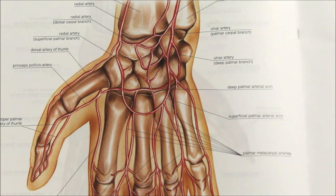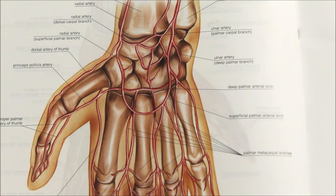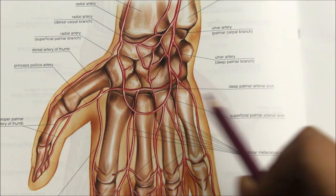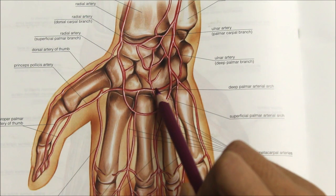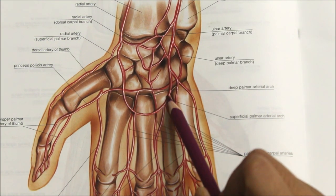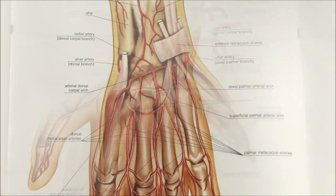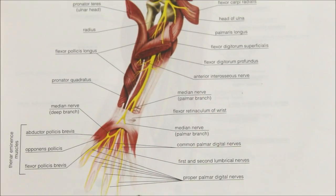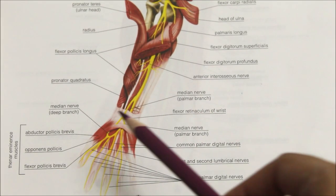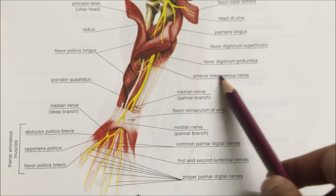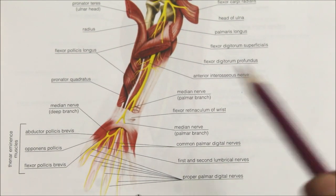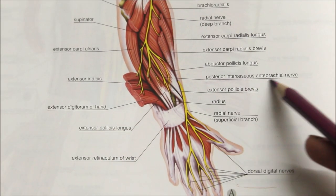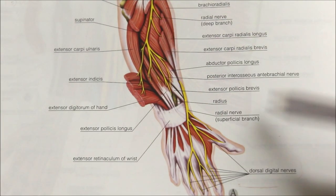Moving on to the blood supply, the wrist joint is supplied by the posterior and anterior carpal arches. Here you can see the deep palmar arterial arch and the superficial palmar arterial arch on the palmar view, and the arterial dorsal carpal arch on the dorsal view. The nerve supply is by the anterior interosseous nerve and the posterior interosseous nerve. The anterior interosseous nerve is a branch of the median nerve.